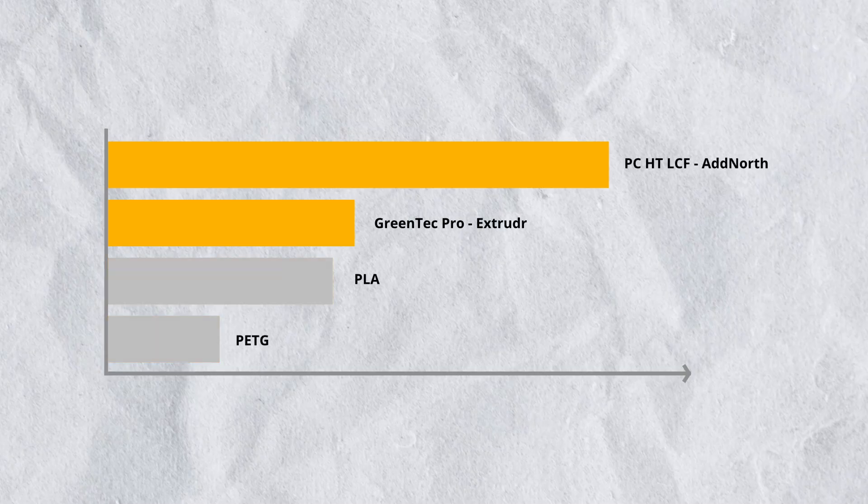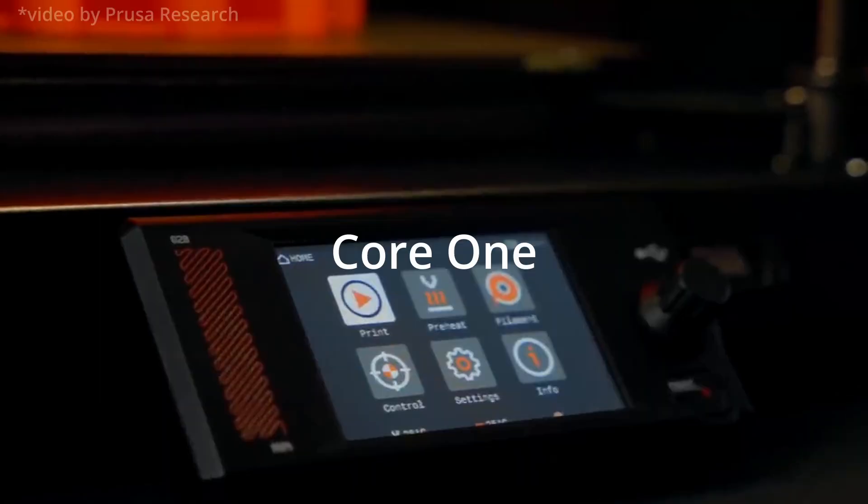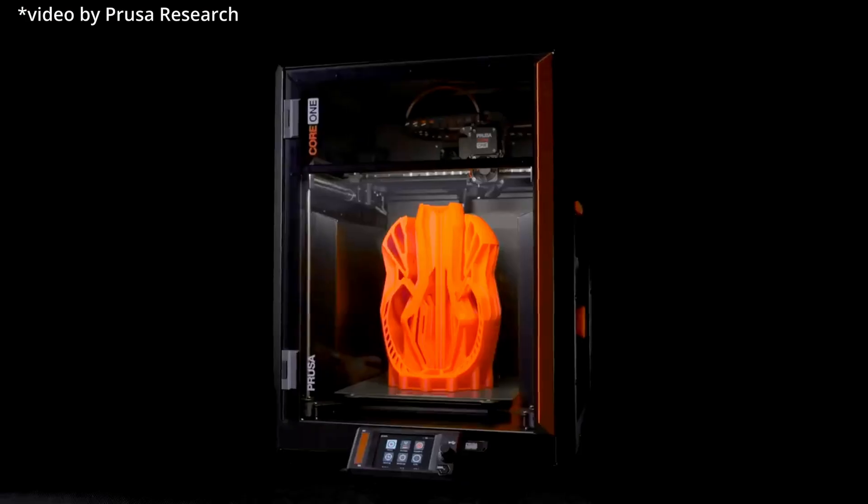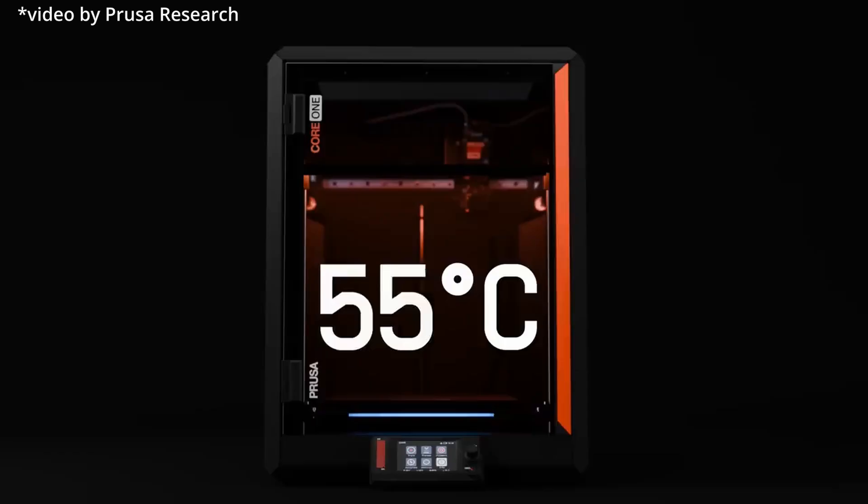For this video I chose PCCF from Adnord and Green Tech Pro from Extruder. Both were kindly provided by the manufacturer. But of course you will get my honest opinion. I chose PCCF because it is the stiffest filament I have tested so far. I will print it on the Prusa Core 1 which can reach over 55 degrees Celsius inside the enclosure. Perfect for printing materials like PC.